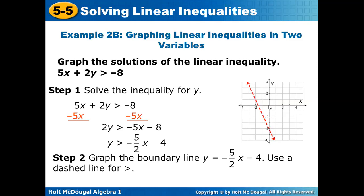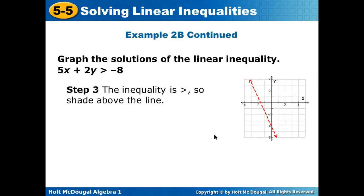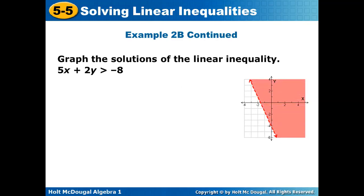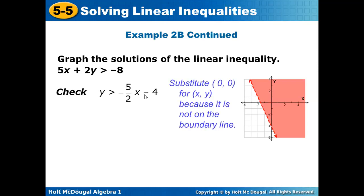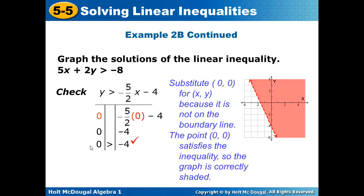Place a point at y-intercept negative 4. Because the slope is −5/2, going down 5 and right 2 may go off the graph, so instead go up 5 and left 2. Join the points to form the line. Since the inequality is greater than, shade the upper part of the line. To check with (0, 0): is 5(0) + 2(0) > −8, i.e., is 0 > −8? Yes. So (0, 0) is in the solution region, confirming our shading above is correct.